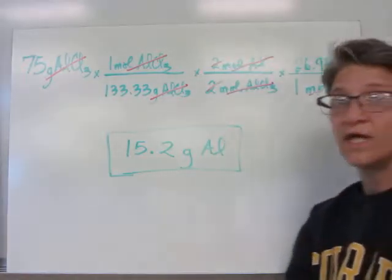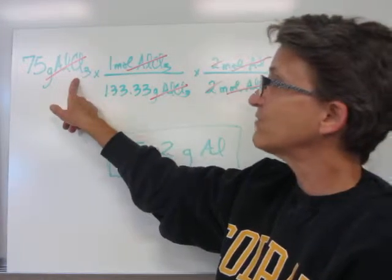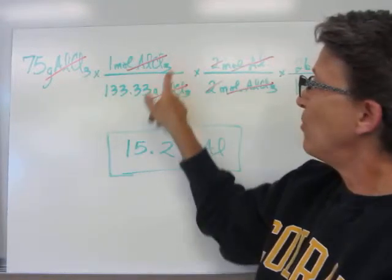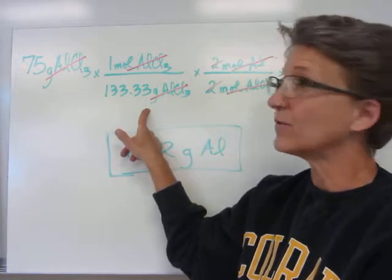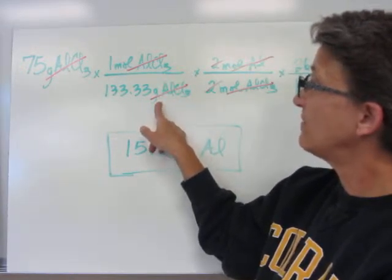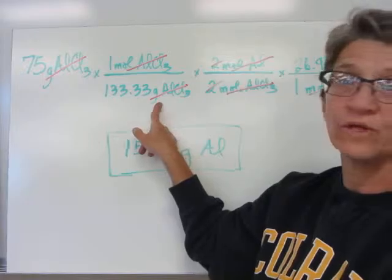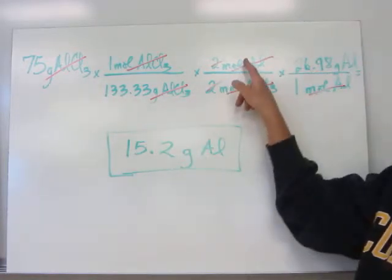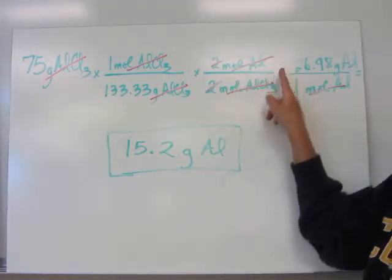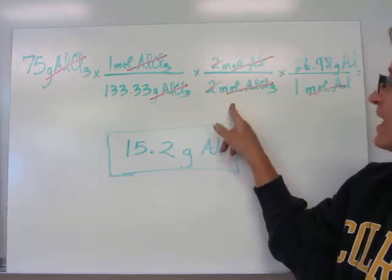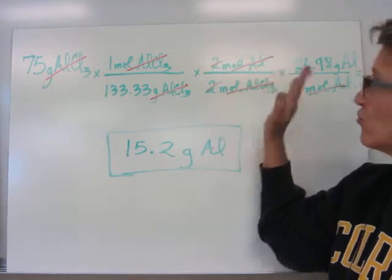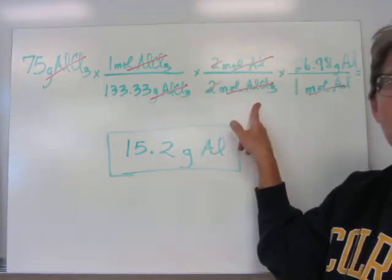Regular stoichiometry, 75 grams of aluminum chloride. Molar mass is 133.33. One mole divided by the 133.33 grams. Grams cancel. It's a 2 to 2 ratio for aluminum over aluminum chloride. I urge you not to skip this step. Write it down so you know you have the right units.